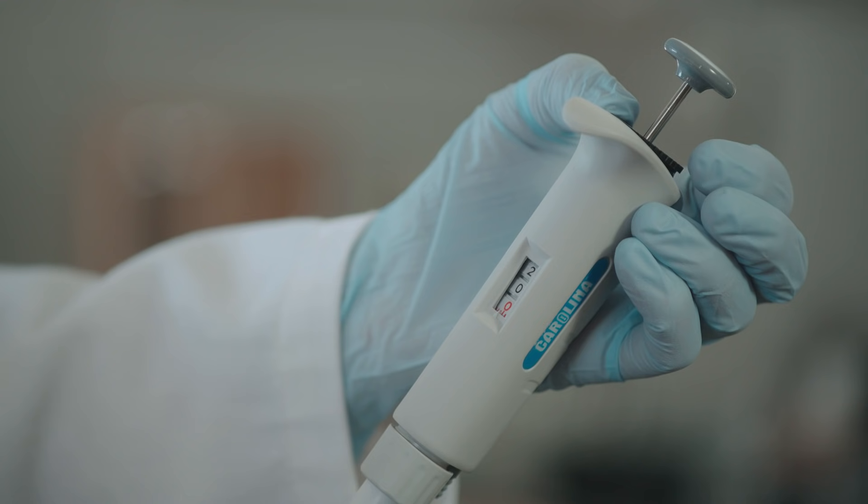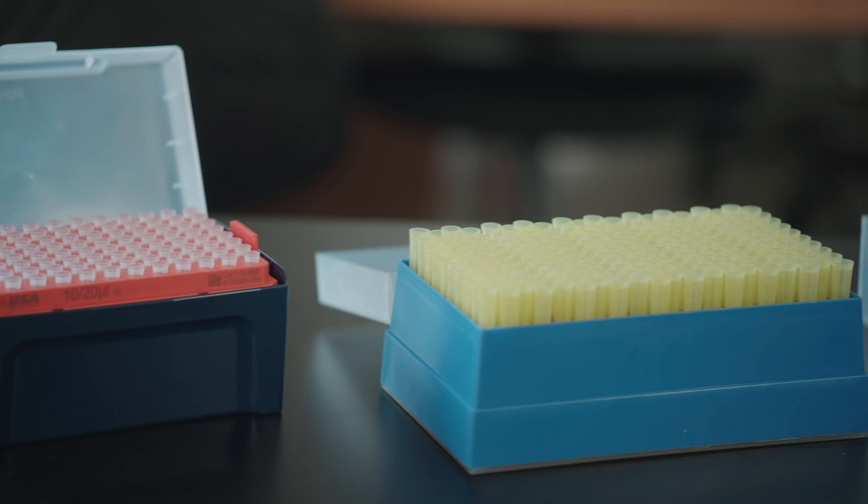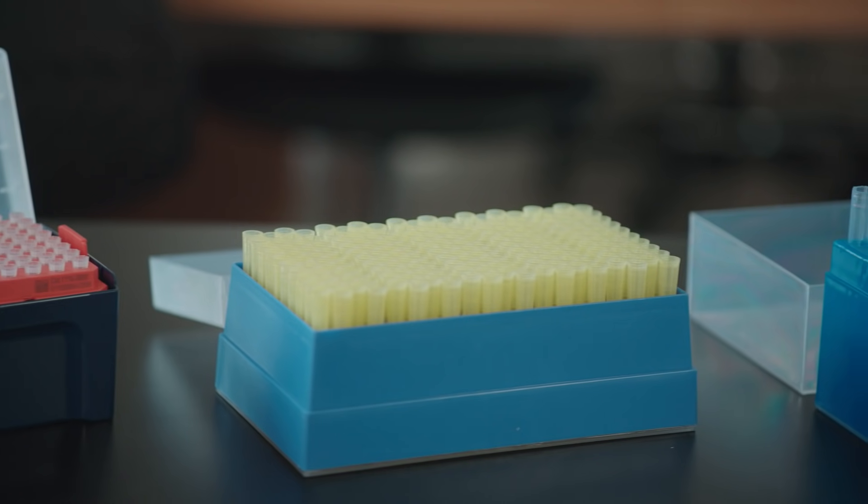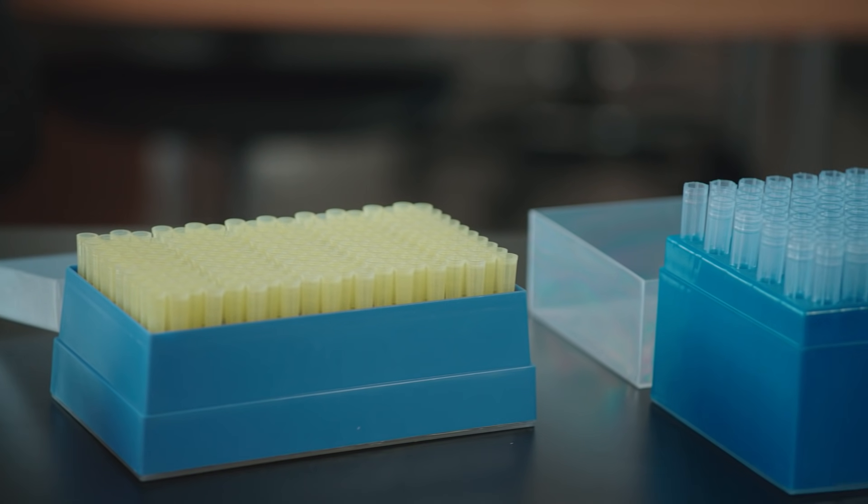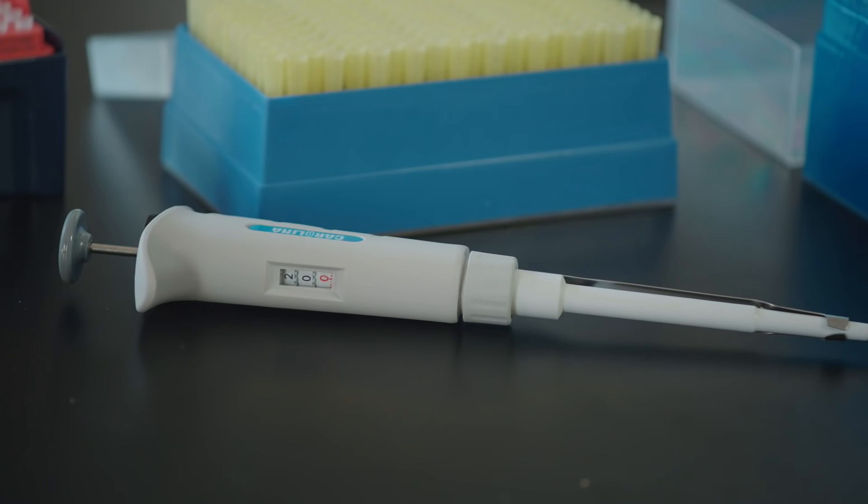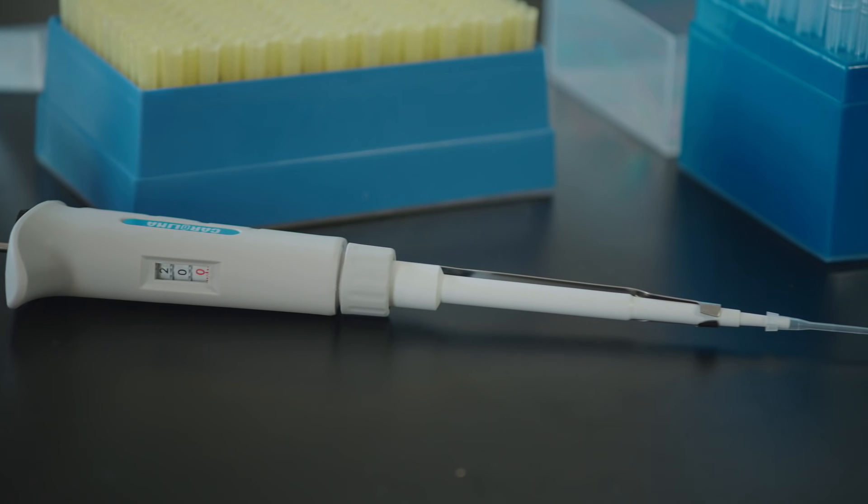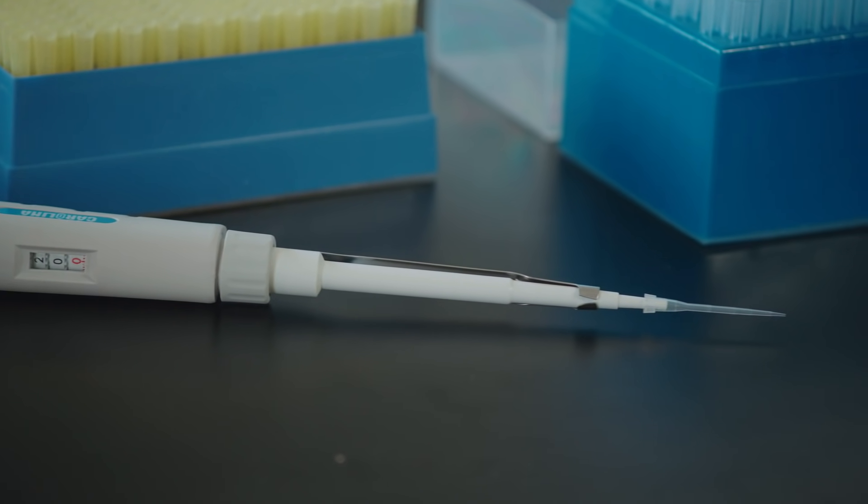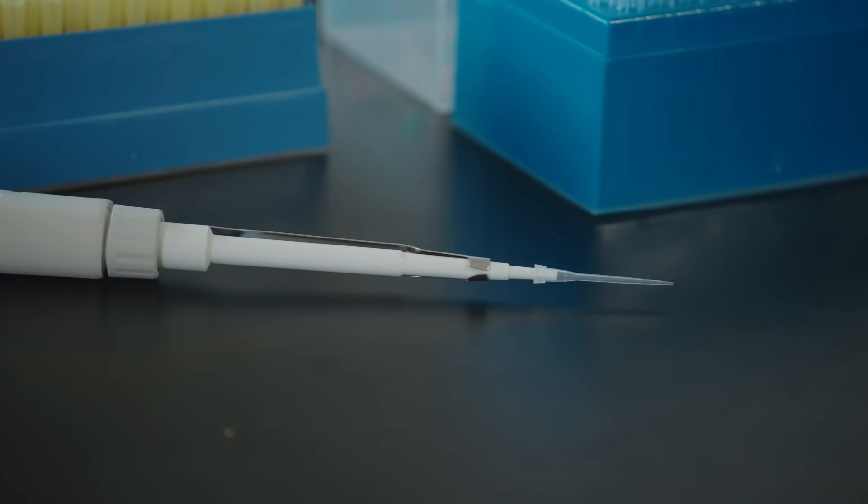In order to take up the indicated volume of fluid using the micro pipette, you must first place a disposable plastic pipette tip onto the end of the pipette. Different types of tips are used with different micro pipettes. This clear tip is used with this P20.